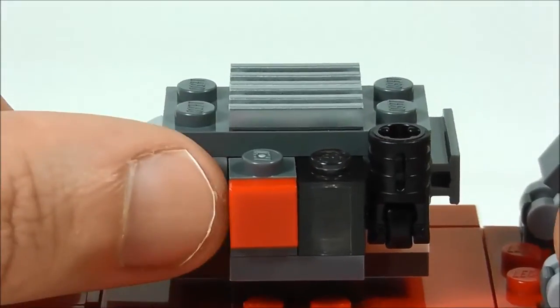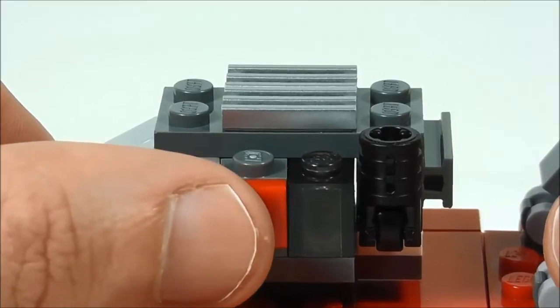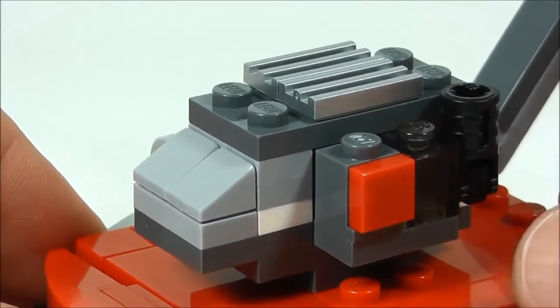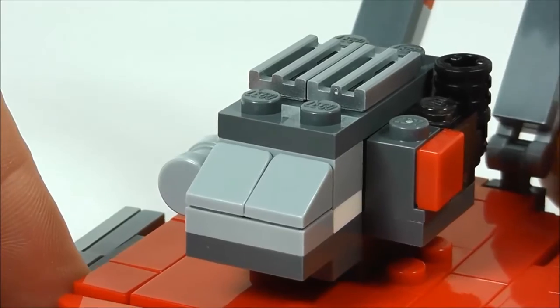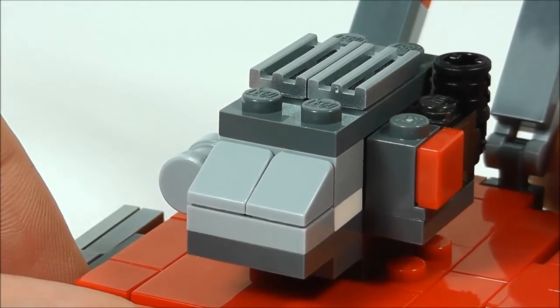Moving over to this side, this is where you would prime it. This is like the carburetor. So you pump that to prime the engine. And then around the front, I put a nice curved slope tile on there to give it the look that you would find on a normal lawnmower engine.